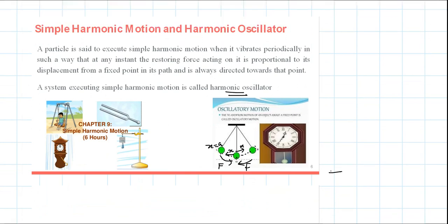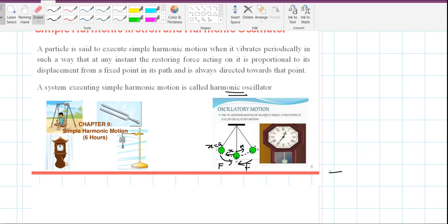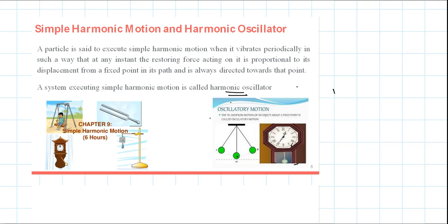A particle can execute simple harmonic motion. Consider the simple pendulum — you can see the equilibrium position where x equals zero. The bob moves back and forth at regular intervals of time. There is a displacement from the mean position in both positive and negative directions. At any displaced point, there is a force which directs the bob back to its equilibrium position.